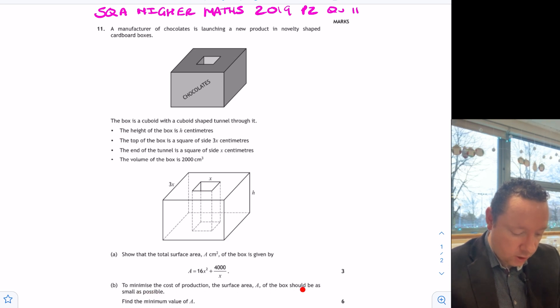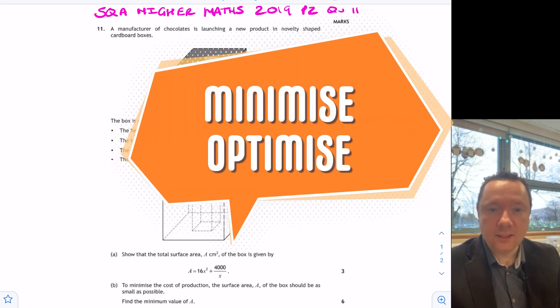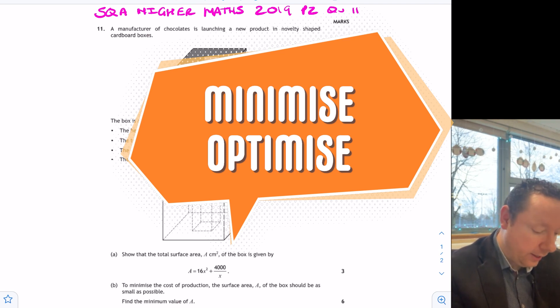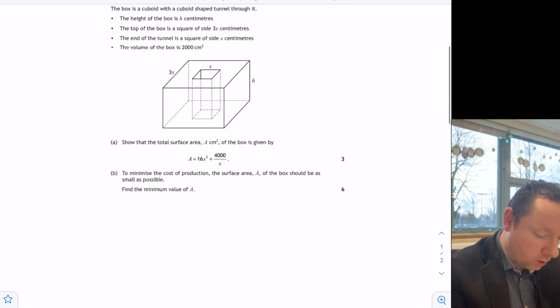Minimize the cost of production. Minimize optimization. That's your key power word for higher maths there. Let's try part A in any case. So there is our box and all the information in it. And I want to surf this area. So I'm just going to start working on it and see if I can get the answer close to what they have got.